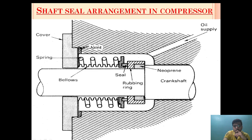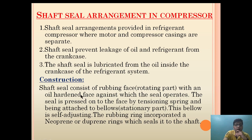This is a neoprene rubber ring. In every seal, there should be two modes of protection: one is parallel and the second is perpendicular. The parallel leakage along the shaft is prevented by the neoprene ring, and the perpendicular leakage is withheld with the help of the sealing arrangement. The shaft seal consists of a rubbing face — the rotating part — with an oil-hardened face against which the seal operates.